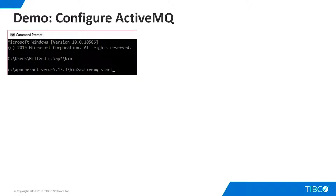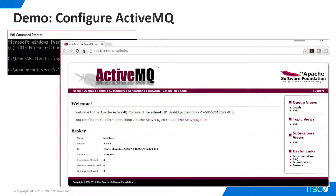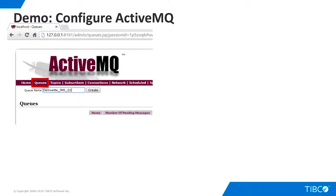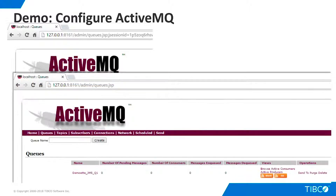Now we're ready to use ActiveMQ. To start it on Windows, open a command window, navigate to the bin folder of the ActiveMQ installation, and type 'activemq start' as shown here. The ActiveMQ administration homepage can be found at the URL shown here; the default user ID and password are 'admin'. Go to the queues page and create a queue named demo@jmsq1 as shown here. The queue appears in the queue table.